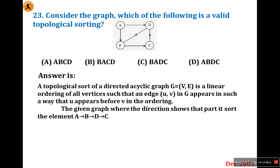In this graph, finding the topology: the sort starts with A, then B. If you select C next there is no path to D, so the correct order is A, B, D, C. The answer is D.